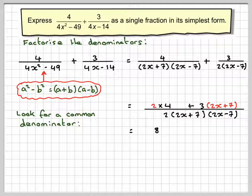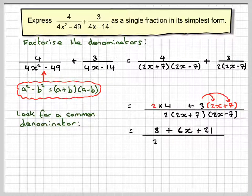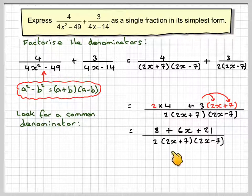2 times 4 is 8, and then we're expanding the bracket. We're going to get 6x plus 21 over my common denominator, which is 2 times 2x plus 7, 2x minus 7.